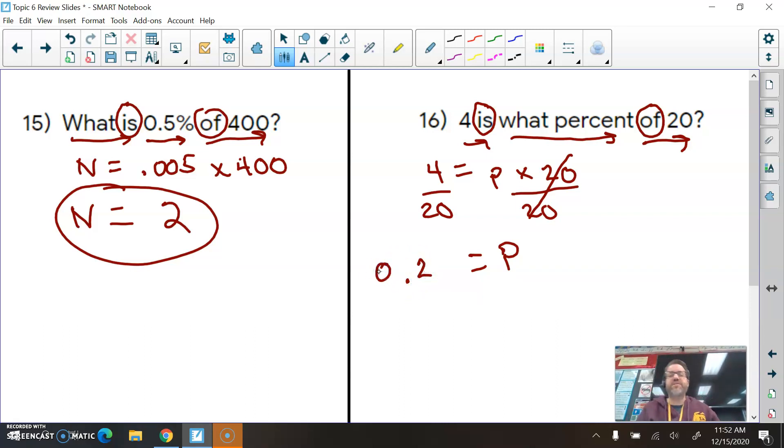I should put a zero in front of that, 0.2 or two-tenths, right? This is not our answer, though. Remember, we want the percent. This is in decimal form. To change decimals into percents, move the decimal point right. One, two spaces. We'll have to fill this space with a zero. And so we end up with 20%. So our percent here, P equals 20%.